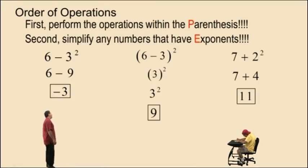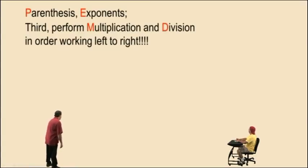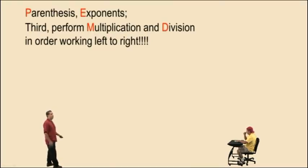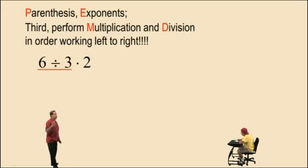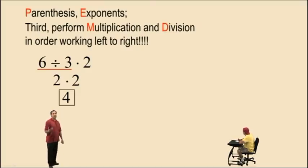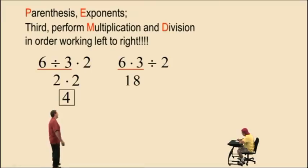We have parentheses, exponents. Now our third category is multiplication and division. Third, perform multiplication and division in order working left to right, whichever comes first. Notice with this expression, we have a division and a multiplication. Division comes first when you work left to right, so you have to perform the division before you do multiplication. 6 divided by 3 is 2, and 2 times 2 is 4. That is the correct answer. Now, here we have a multiplication and division. Multiplication comes first working left to right, so we perform that operation first. 6 times 3 is 18. 18 divided by 2 is 9.